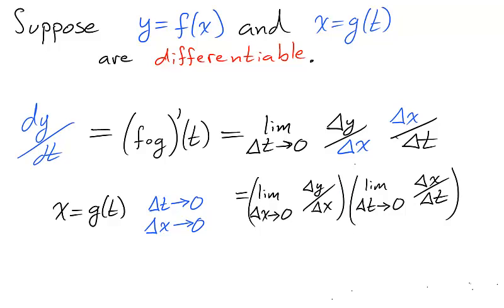We began by assuming that these functions are differentiable. That means that both limits exist. So we were correct in using an equal sign, because we can split the limit over the product due to the smaller limits existing. And we obtained the derivative of our composition.